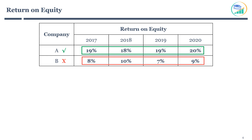The acceptable range of ROE can differ across industries. For example, a utility company will have low ROE — an 8–10% return on equity can be considered a sign of an efficient company. However, software companies typically have high ROE, and you should consider 15% or more before investing.